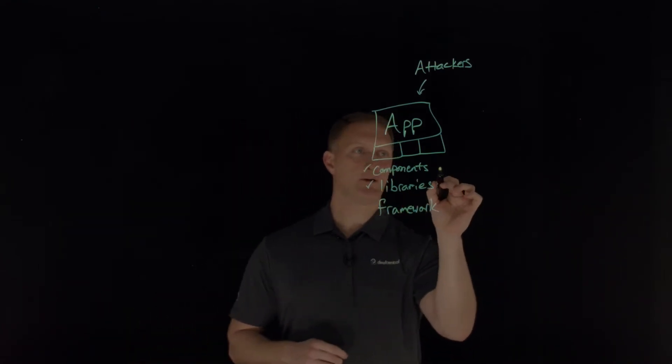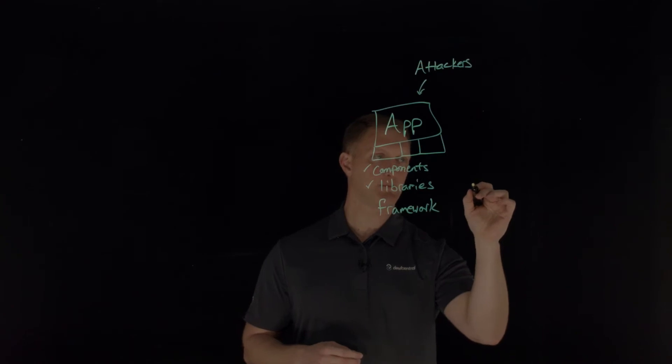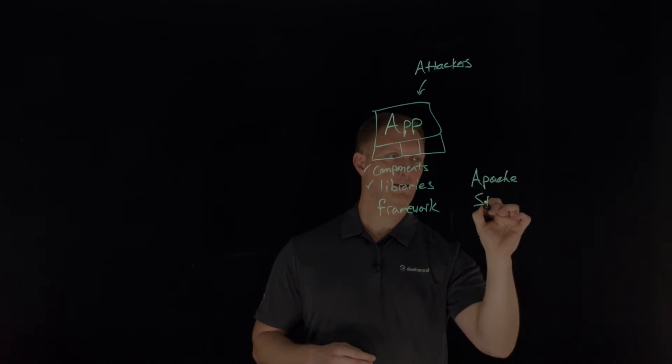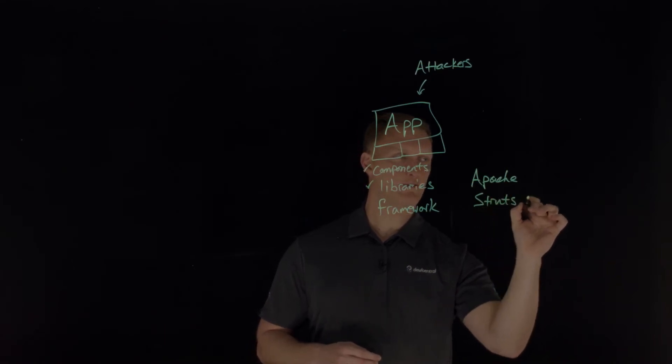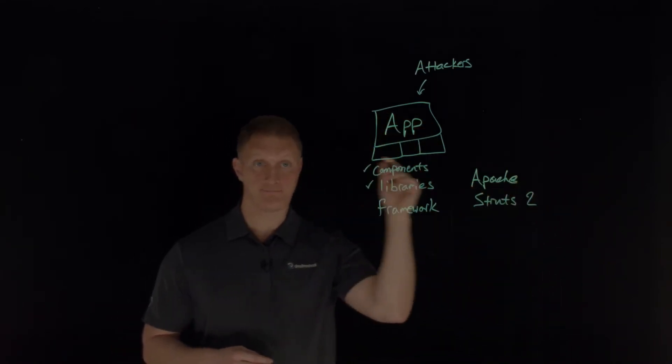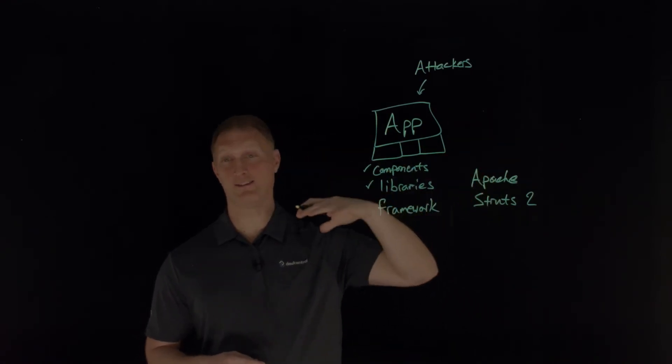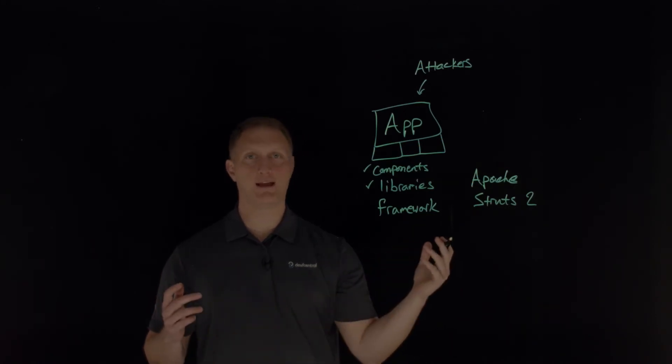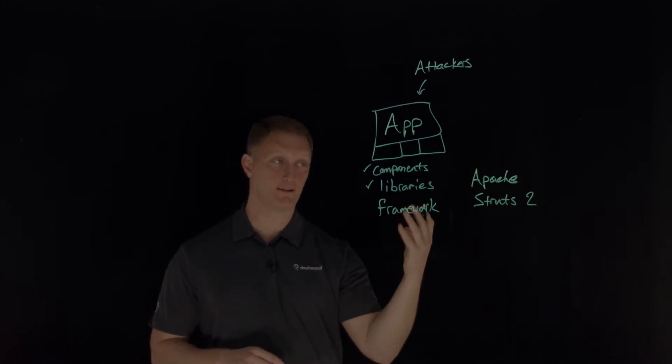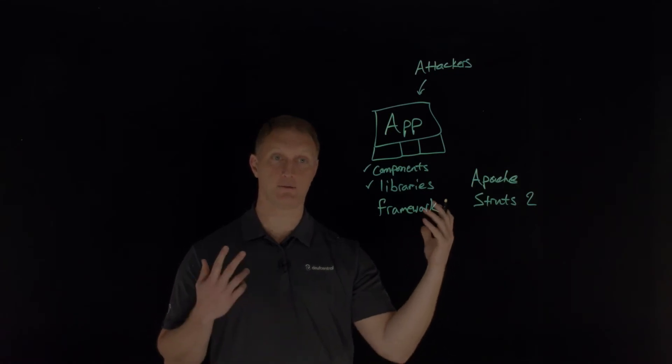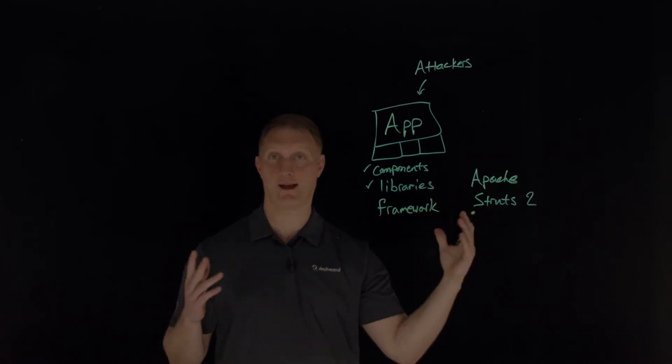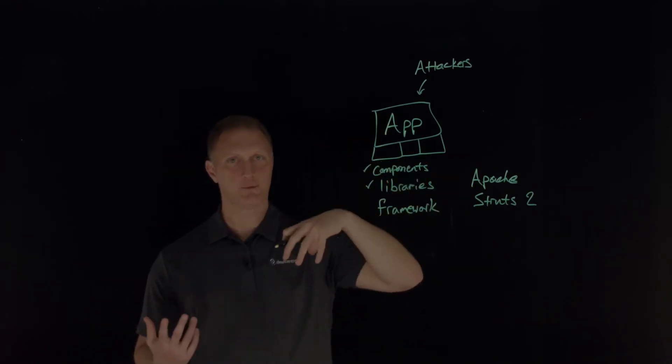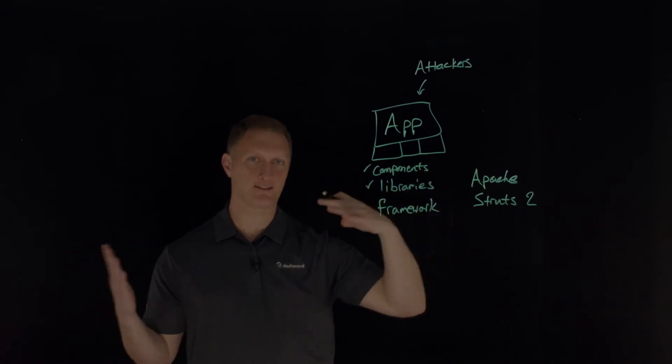So like, for example, one component that you may use or one framework, and I'll just put it right over here, Apache Struts 2. The Apache Struts 2 framework, this was back in 2017, it had this remote code execution vulnerability that enabled the execution of arbitrary code on the server. I mean, it's this really big thing, and it led to significant breaches on a variety of applications all over the world. So that was back in 2017. This is the 2021 OWASP list. So you're talking about several years here.